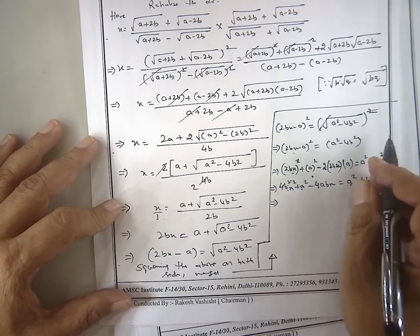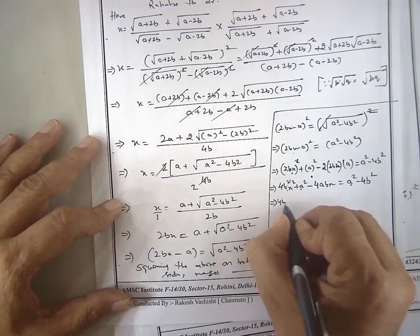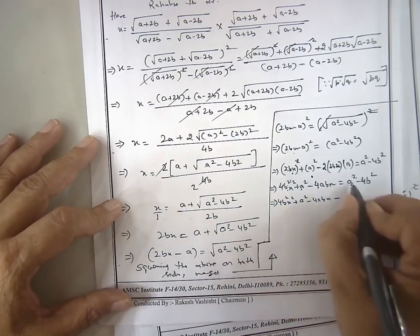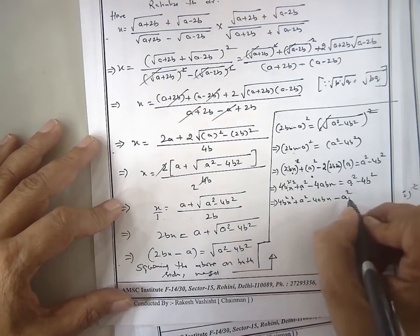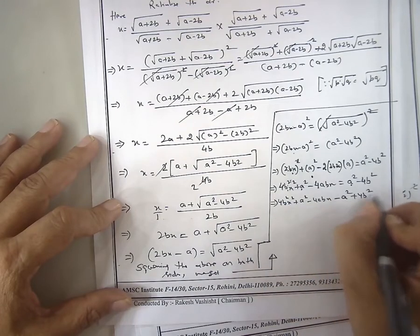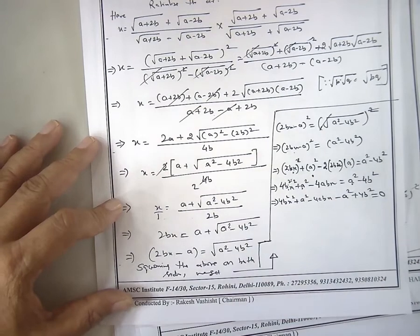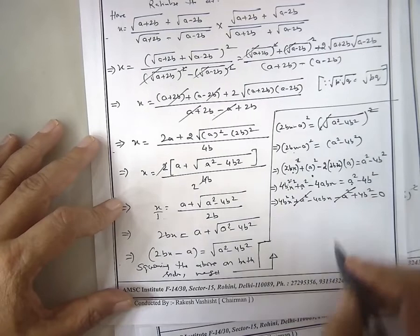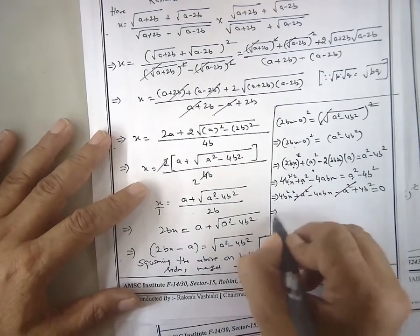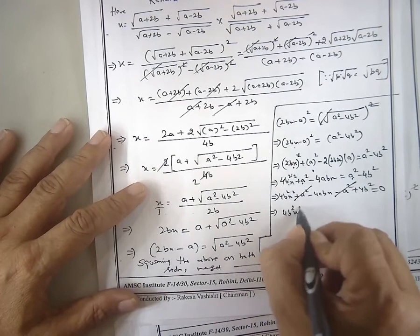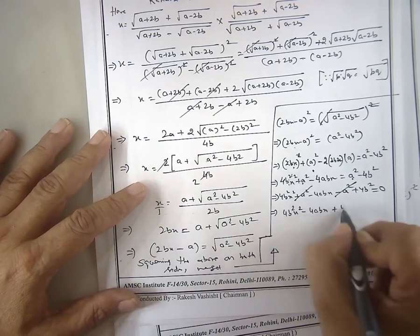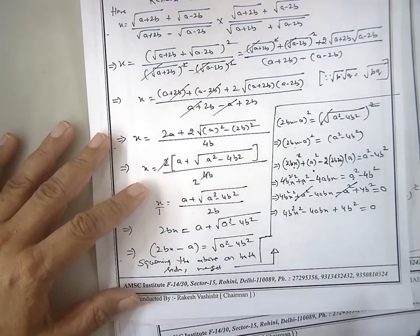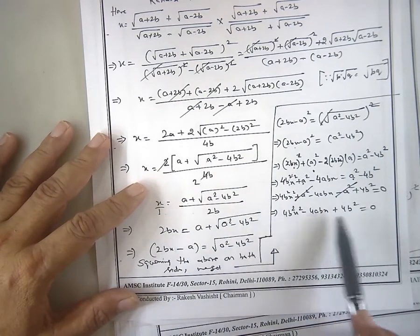Equal to zero. Plus a squared minus a squared cancels. Take 4b common: 4b times b x squared minus x plus b. That's right.